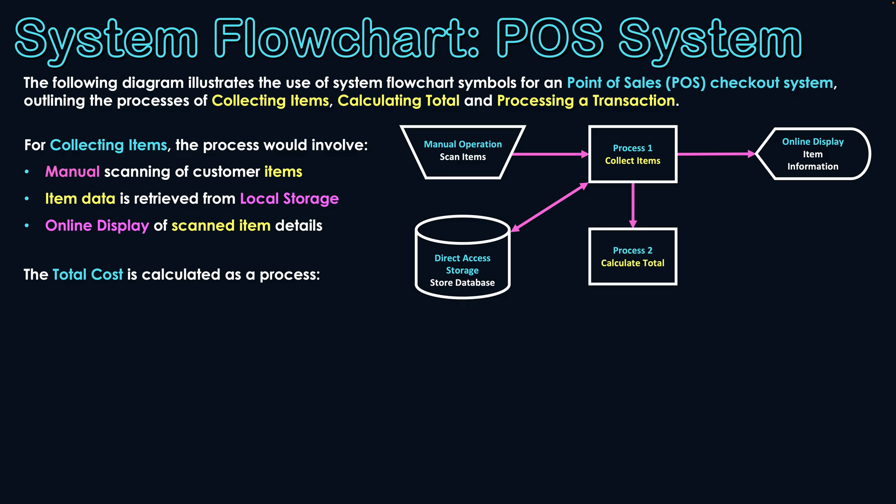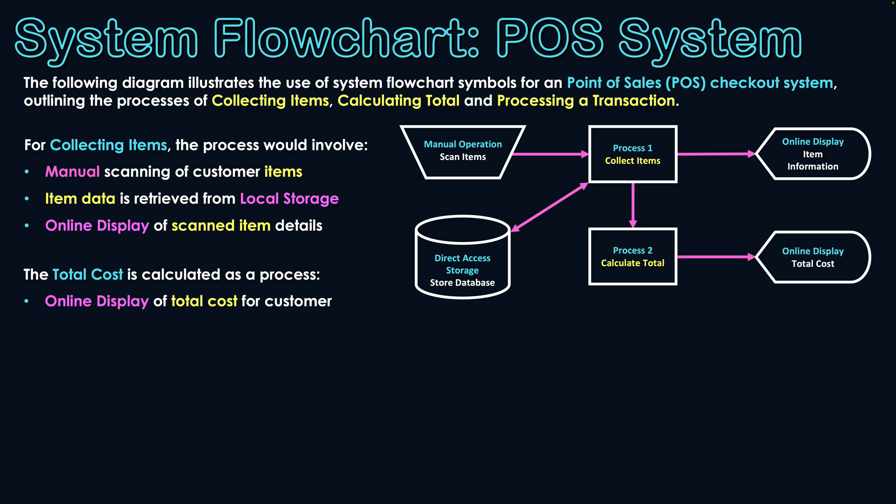From here we move on to calculating the total cost. As each item is scanned, the cost is being tallied and increasing, with the total cost updated on screen with every scan — until we scan the final product and a final total cost appears on screen for the customer to see, validating the actual cost of all their items.